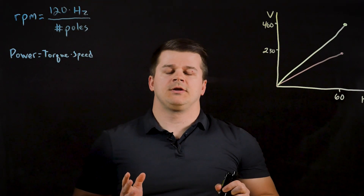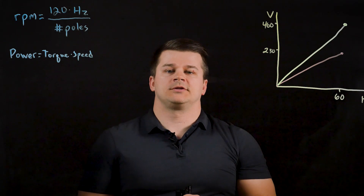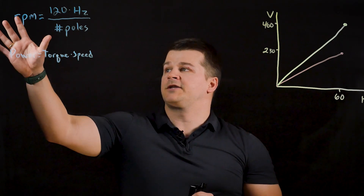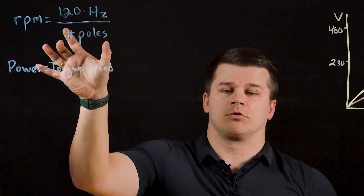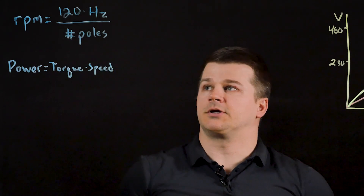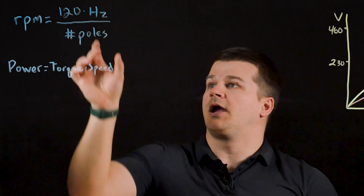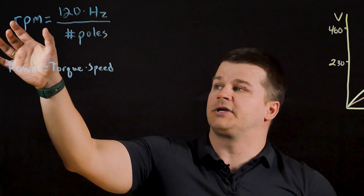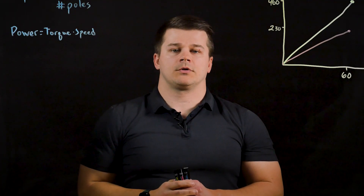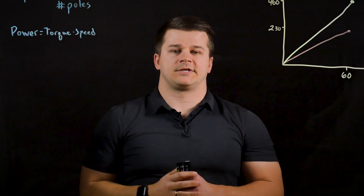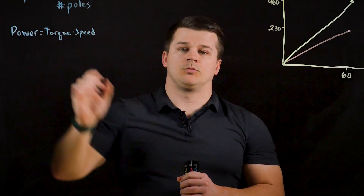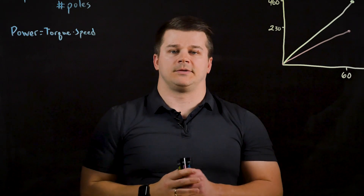The speed of the motor is directly proportional to the output frequency to the motor, based on this equation. The number of poles of the motor will be known, such as a four-pole induction motor, and then based on the output frequency we can calculate the RPM. For the standard four-pole induction motor running at the rated speed of 60 Hertz, this speed will be 1800 RPM minus the slip.